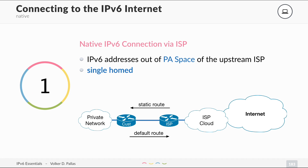The first option is native IPv6 connectivity via your ISP, where you get an IPv6 address or a whole IPv6 prefix out of the PA (provider assigned) space of your upstream ISP. Your provider has been allocated this space from the RIR or LIR pool. You are single-homed with one internet connection, a default route to the ISP, and the ISP has a static route back to your network. This is the easiest setup.